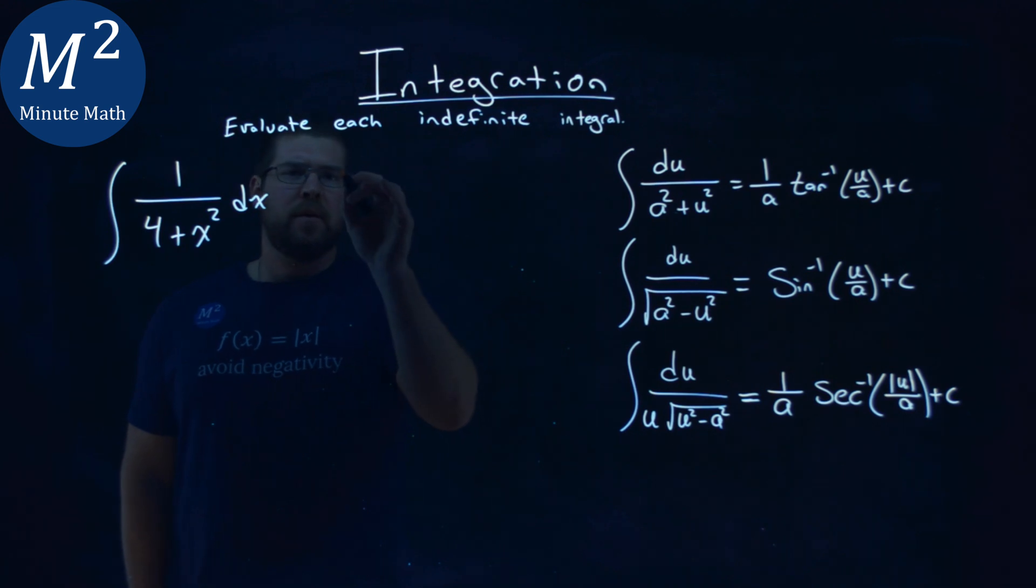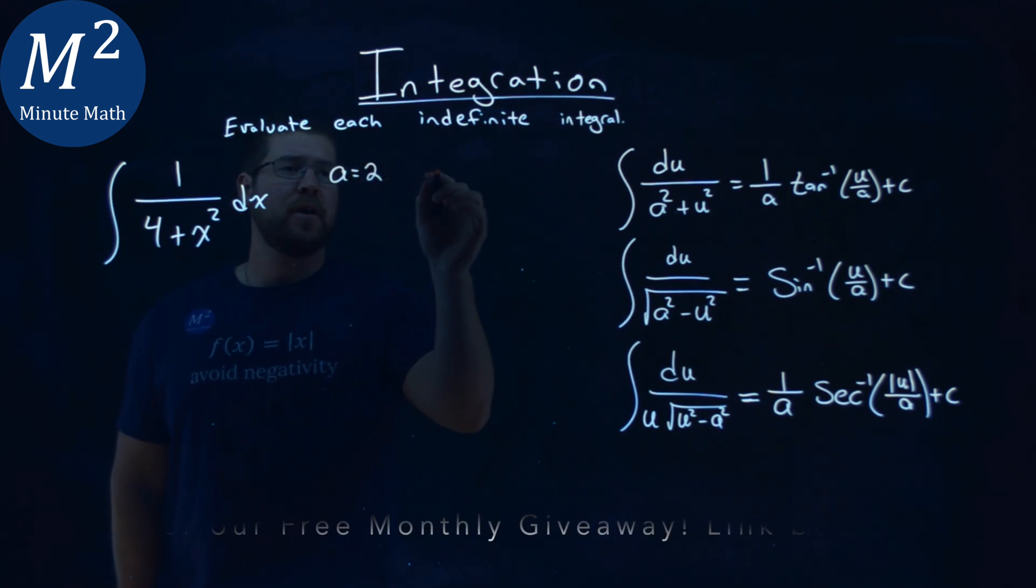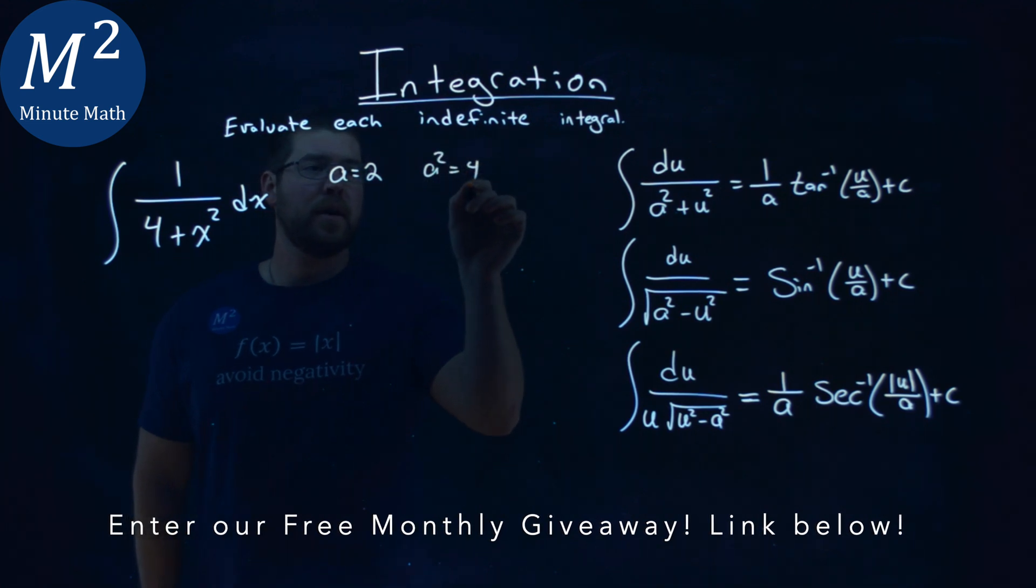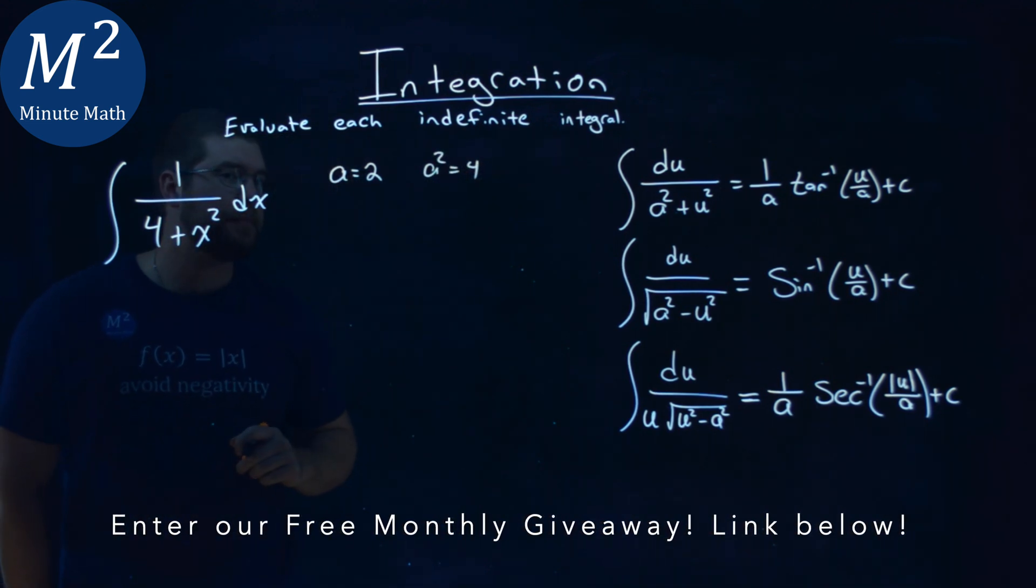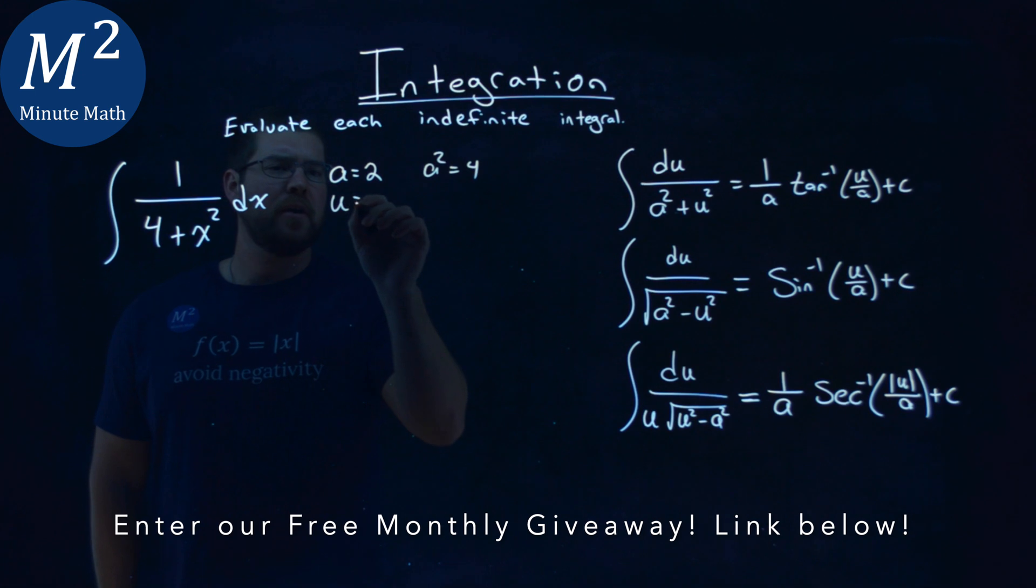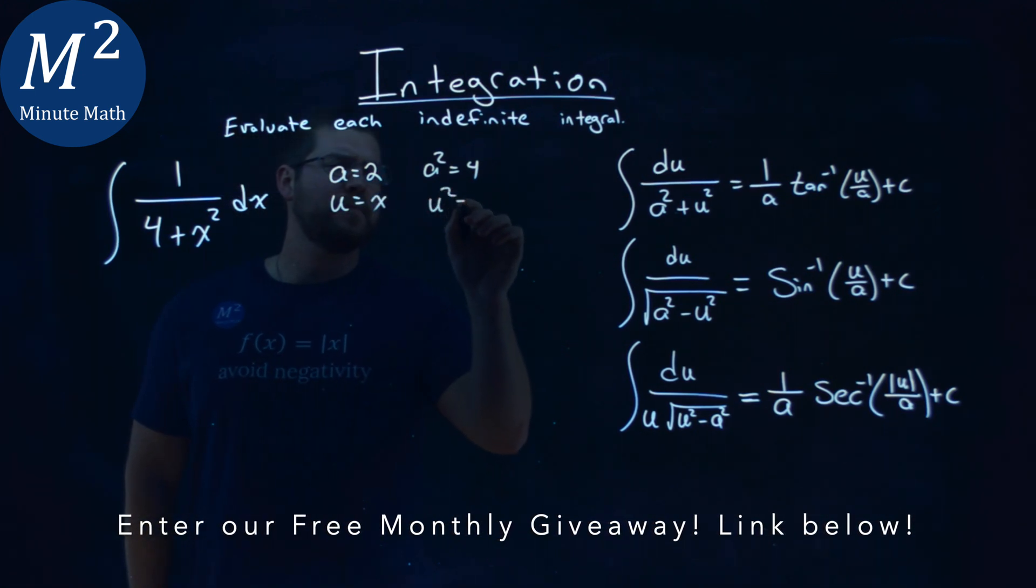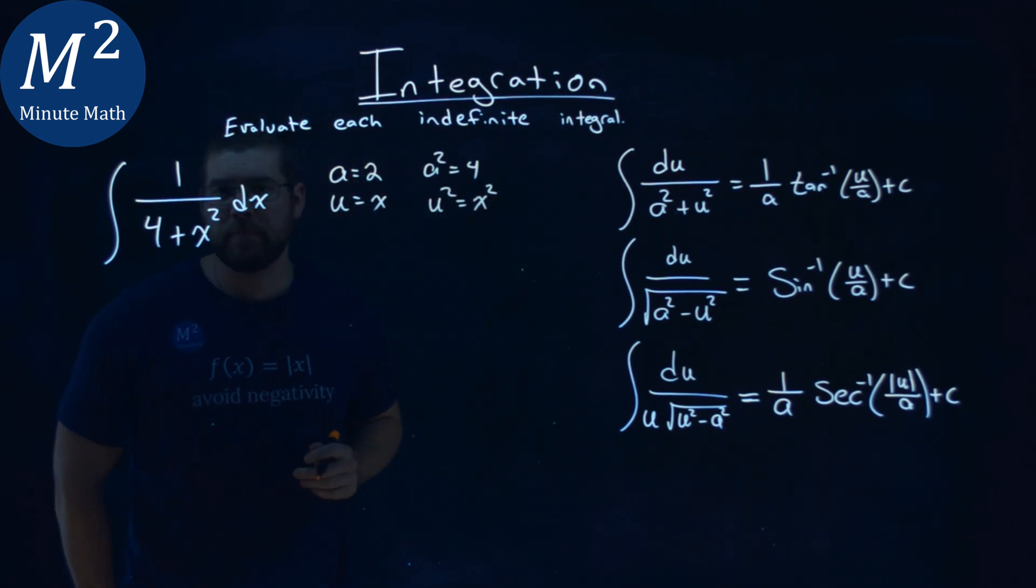So let's go figure out what an a value can be. Well, if my a value is 2, my a squared value is 4. That's the value that's right here. If my u value is x, then the u squared is equal to x squared.